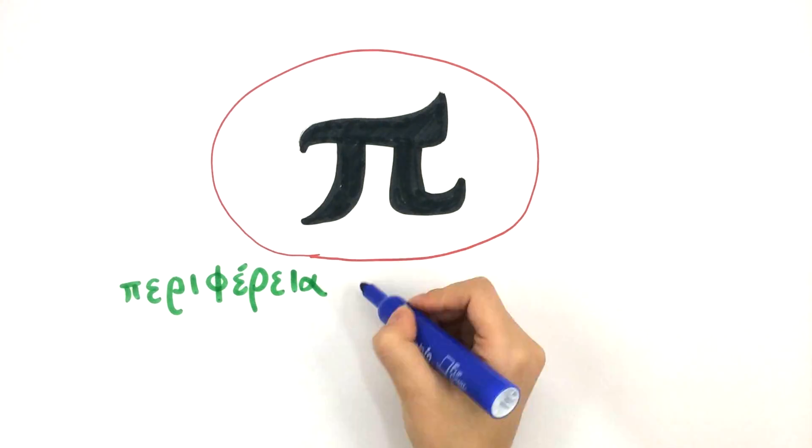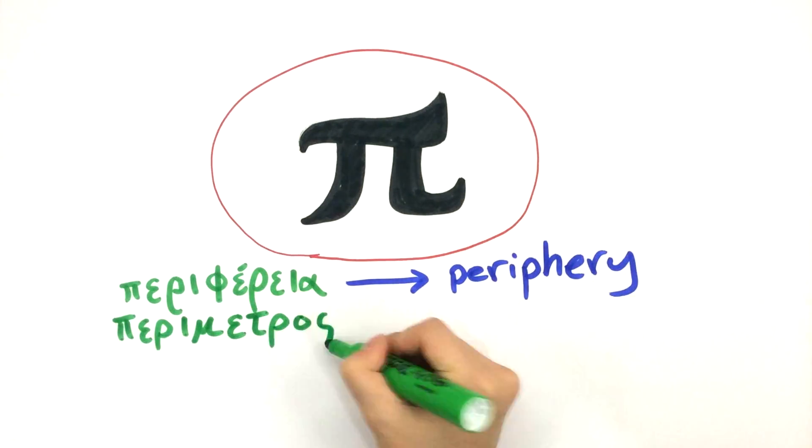We explain how Archimedes chose pi from parametros, meaning perimeter, when determining the circumference of a circle.